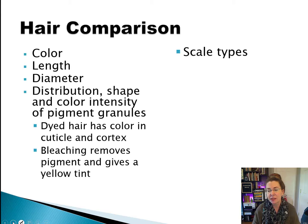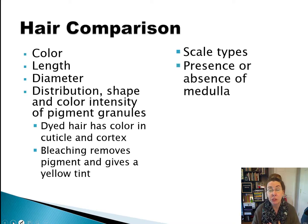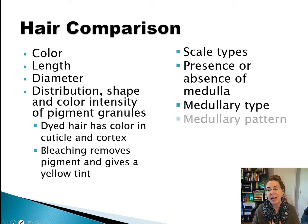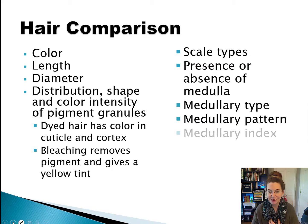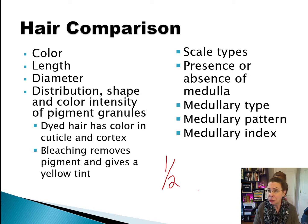We also look at the scale types — this is where we get into human versus non-human species. Humans all have that imbricate scale pattern, while other mammals can have all sorts of different patterns. We look and see if the medulla is present or absent, and also look at the type and pattern of that medulla. Finally, we look at the medullary index: a medullary index of greater than one half is usually an animal, while less than one third is usually a human.